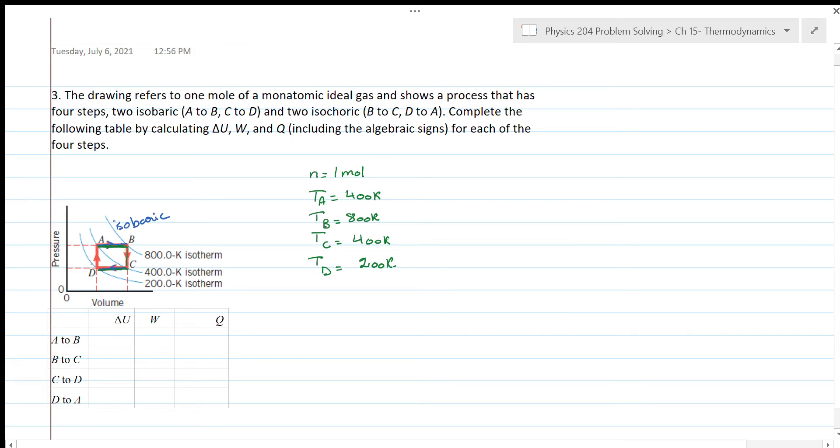The question is we want to complete the table by calculating delta U, the work, and Q, the amount of heat involved, including the signs for each of the four steps.